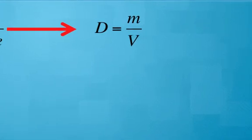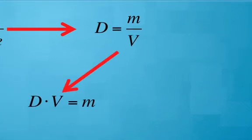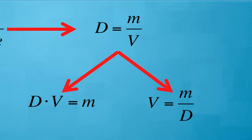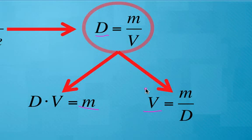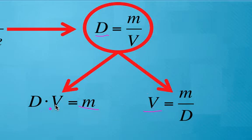Some people prefer to have different formats of this. For example, we can solve for mass separately by multiplying both sides by the volume, and we can solve for the volume separately by dividing both sides by the density. All three of these equations, each one of them solves for a different variable. I actually think it's in your best interest to stick with the main equation. Focus on knowing D equals M over V and then trust in your algebra to solve for these other two equations as needed.